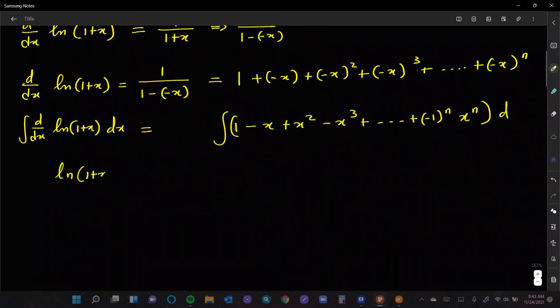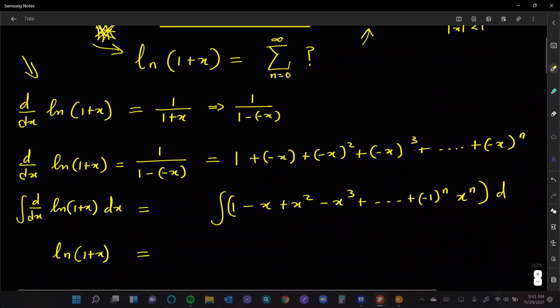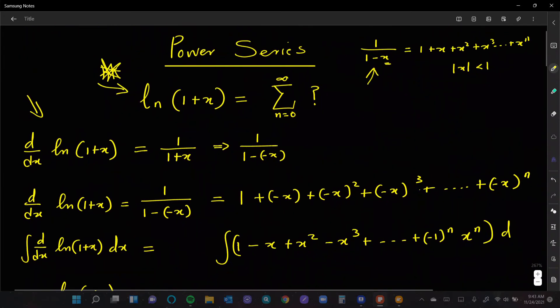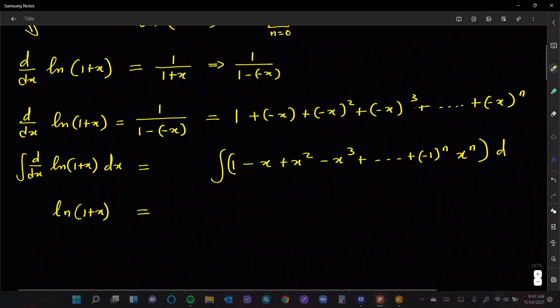Okay, so the left-hand side is going to give us back what we had originally, which is the natural log of 1 plus x. And on the right-hand side, we're going to have the integral of each of the functions. Polynomials are always easy to integrate or differentiate. That's why the power series is a good thing. So this gives us, if we take the integral of 1, it's going to be x.